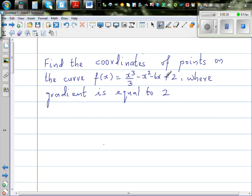So you want to find the coordinates of the points where the gradient is equal to 2. Let's write the function: f of x equals x cubed over 3 minus x squared minus 6x plus 2. The question is, f dash x, or the derivative, is given to be 2. We want to find x, and from x we can find y by putting it back in this equation. You've got f of x and f dash x equals 2 because the gradient is given to be 2.